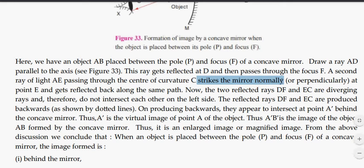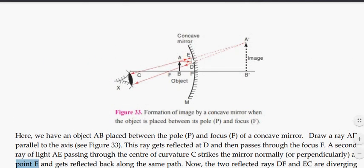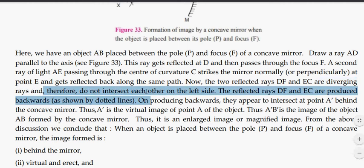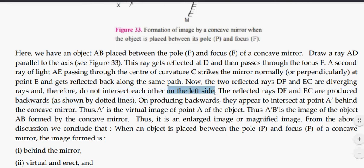It makes a ninety degree angle with the mirror, perpendicularly at point E. It reflects back along the same path backward. Now the two reflected rays are diverging, so they do not intersect each other on left side. So we will extend them behind the mirror with dotted lines.